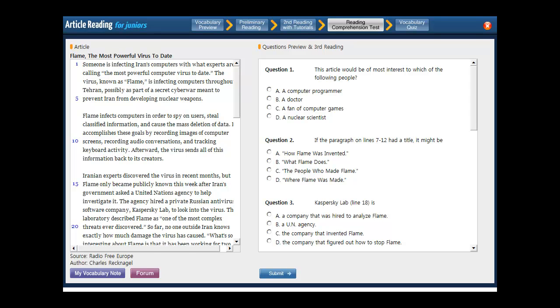We'll look at question number one first. The article would be of most interest to which of the following people? So for this one, you have to make some assumptions. You have to make a little guess. So who would enjoy this article? Now, it's an article about a computer virus, right? So someone who is interested in computers would probably be the best answer for you here.